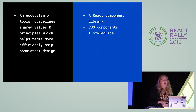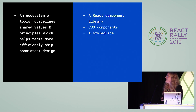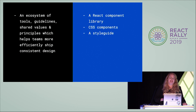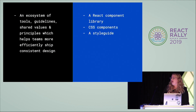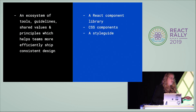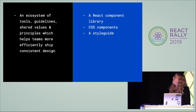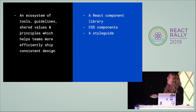One of the first things that people ask me when I tell them that I'm a design systems engineer — which is like the coolest title I've had in my career so far — is they ask me to define what a design system is. I believe that a design system is an ecosystem of tools, guidelines, shared values and principles that helps teams ship more efficiently and ship consistent design. The motto would be: efficiently shipped consistent design. What a design system is not is just a React component library, just CSS components, or just a style guide. It has to be an ecosystem, a universe of tools, in order to be effective.